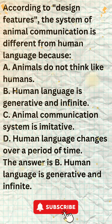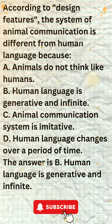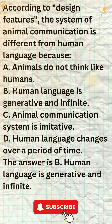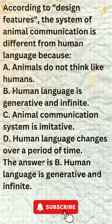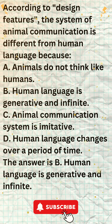Here is an example of how the generative and infinite nature of human language differs from animal communication. A dog can bark to communicate a variety of things, such as excitement, fear, or aggression. However, the dog's bark cannot be used to communicate abstract ideas such as love, justice, or the meaning of life.